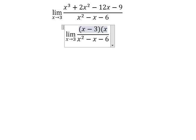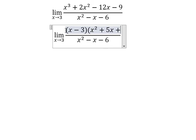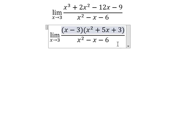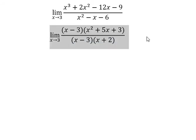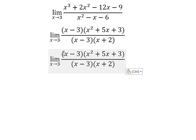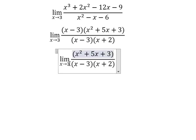minus 3, x square plus 5x plus 3. This one in here will be x minus 3, x plus 2. We simplify x minus 3 on numerator and denominator. Next we put number 3 in here, here